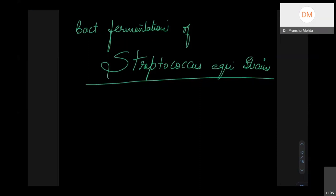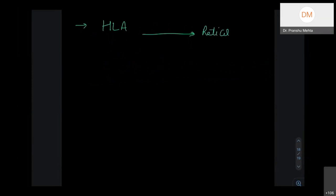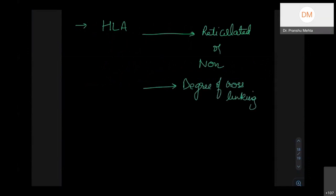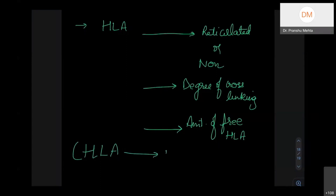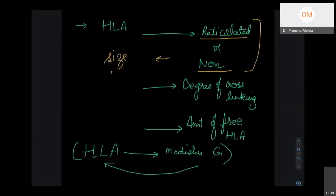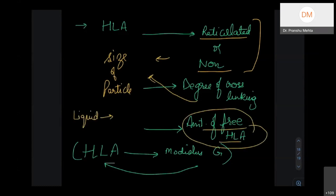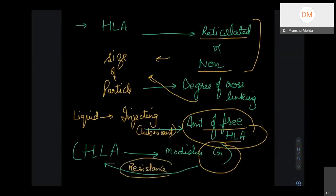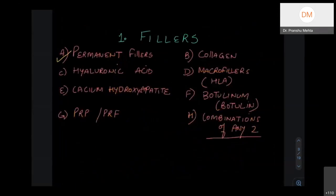Cross-linked hyaluronic acid fillers can be in reticulated or non-reticulated form, with varying degrees of cross-linking and some free hyaluronic acid present. The free hyaluronic acid acts as a lubricant during injection. The modulus G value indicates the filler's resistance to deformation — higher modulus G means higher resistance and the filler cannot be easily deformed. These properties determine particle size and clinical behavior.